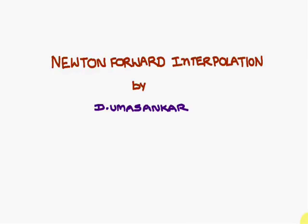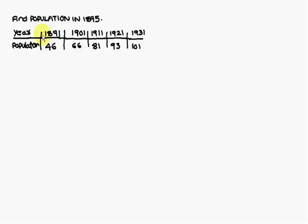Today we are going to discuss Newton forward interpolation. The first problem is to find the population in the year 1895. The given table shows year versus population: in 1891 it is 46 lakhs, in 1901 it is 66 lakhs, in 1911 it is 81 lakhs, in 1921 it is 93 lakhs, and in 1931 it is 101 lakhs. We have to find the population in 1895, which lies between 1891 and 1901, using Newton forward interpolation.